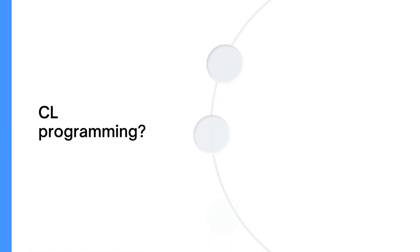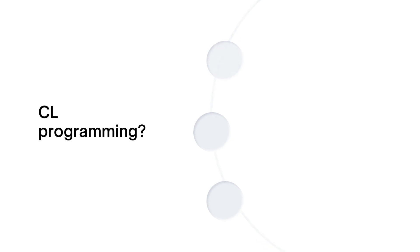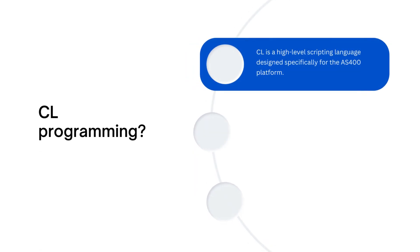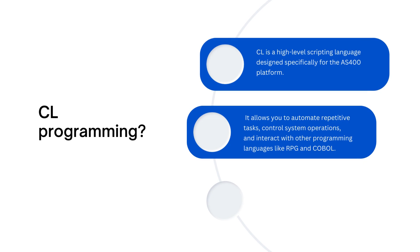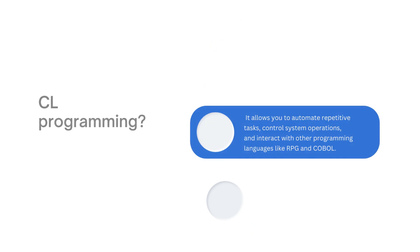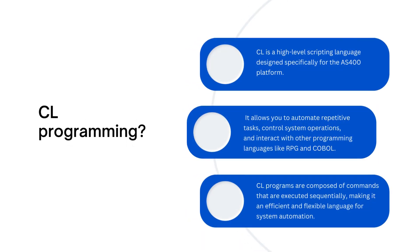So, what exactly is CL programming? CL is a high-level scripting language designed specifically for the AS400 platform. It allows you to automate repetitive tasks, control system operations, and interact with other programming languages like RPG and COBOL. CL programs are composed of commands that are executed sequentially, making it an efficient and flexible language for system automation.